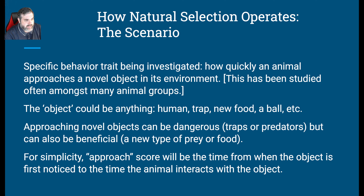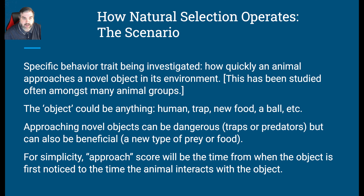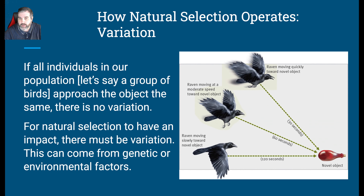Approaching novel objects can be dangerous, especially if it's a trap or a predator. It can also be beneficial — it could be a new source of food or a different type of food. For simplicity, the approach score will be the time from the moment the object is first noticed by the animal to the time that it actually goes over and interacts with it.